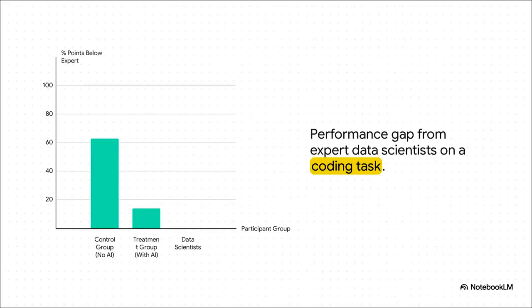This chart shows how they did compared to expert data scientists, who are the benchmark at zero. The control group — the folks with no AI — struggled big time, scoring 63 percentage points below the experts. But the group using AI was only 14 points below. They practically closed the entire skill gap, instantly.